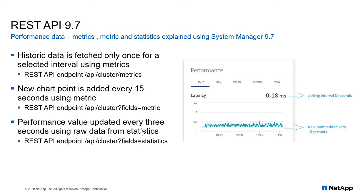If you are interested in raw data — data more granular than this 15-second interval — we have something called 'statistics'. You can use the statistics endpoint to get raw, uncooked data. Different kinds of performance metrics can be fetched using the REST API endpoint, and System Manager takes advantage of this to display them.